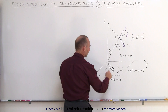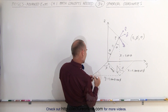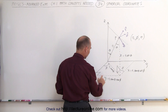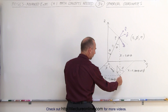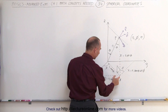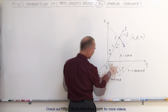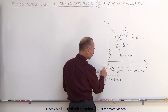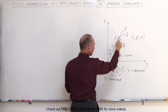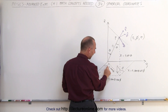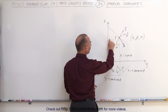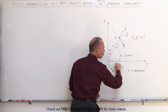Now for the y distance: looking at this triangle in the xy plane, this is perpendicular to the x-axis, giving us the right angle. This side is opposite to the angle phi. The y component — the distance in the y direction from the z-axis to the point in space — can be described as R sine theta multiplied by the sine of phi. Therefore, y equals R sine theta sine phi.